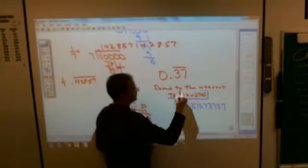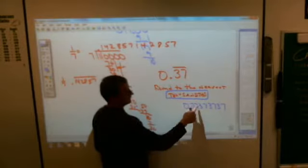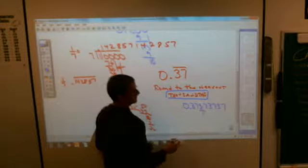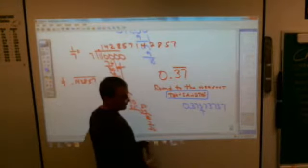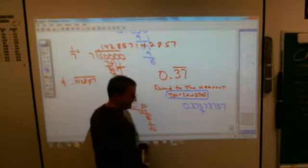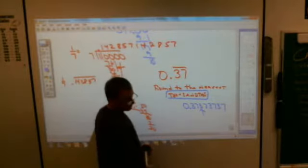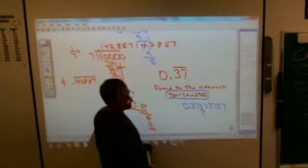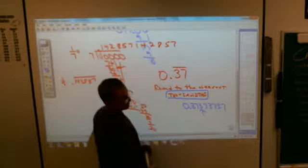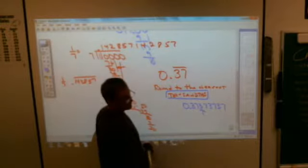What digit is in the thousandth place? Tenths, hundredths, thousandths. Is that digit going to stay at 3 or get rounded up to a 4, Kate? Get rounded up to a 4. Why is it going to get rounded up to a 4? Oh boy. Now we're at a quandary here. 3 or a 4 and why? Kevin?